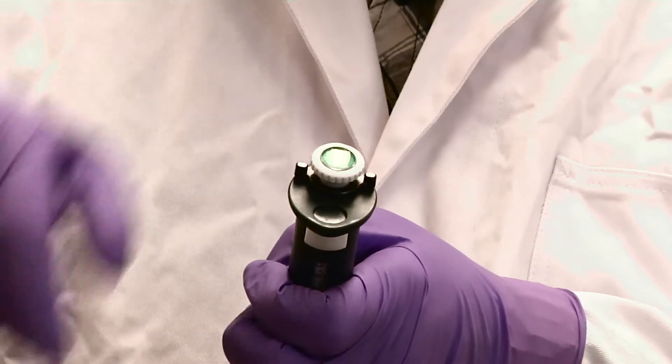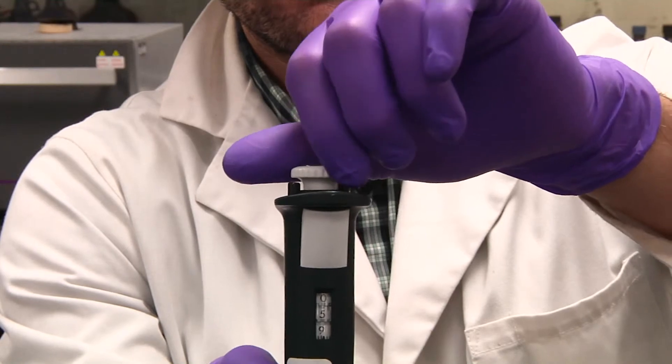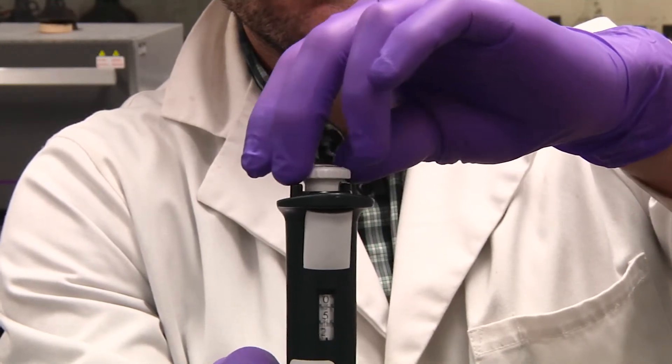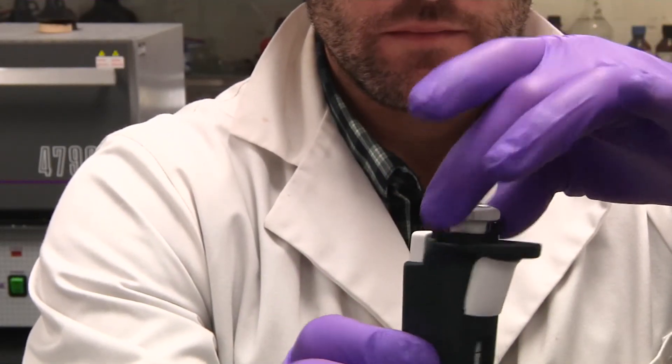simply turn the locking ring on top of the pipette counterclockwise to allow the volume to be set. Turn the white plunger on top of the pipette until the display reads 50. Lock the volume by turning the locking ring on top of the pipette clockwise.